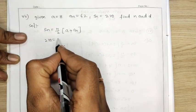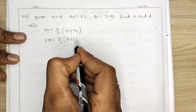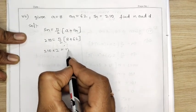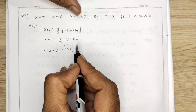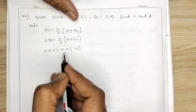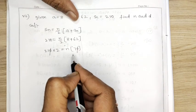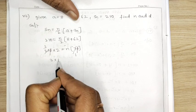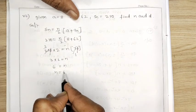Sn is 210, so 210 equal n by 2 into a plus an. a is 8 and an is 62. 210 into 2 — shifting 2 to the left — equals n into 62 plus 8, which is 70. Cancelling zeros: 21 by 3 gives 7, so n equals 6.